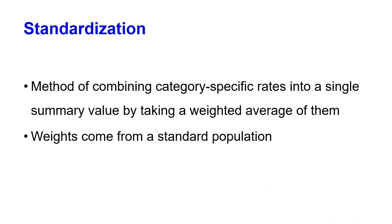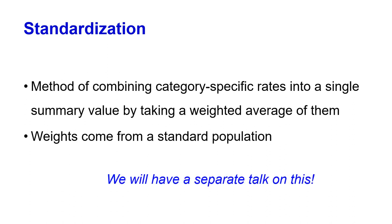Standardization is another way of controlling for potential confounders at the analysis stage. It combines category-specific rates into a single summary value by taking a weighted average, with weights coming from a standard population. We'll talk about standardization in more detail in a separate Epi Minutes presentation in the future.